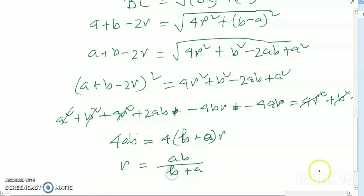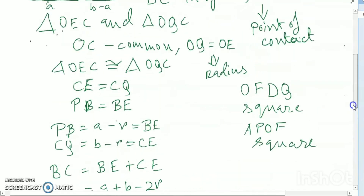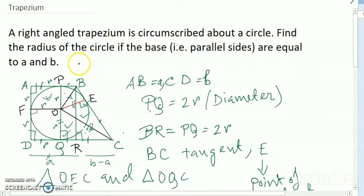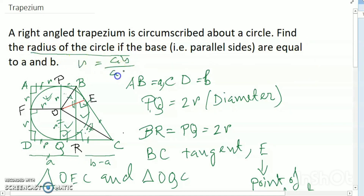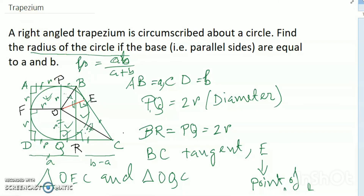So r is equal to 4AB divided by 4 times (A plus B), which simplifies to r equals AB divided by (A plus B). I hope it is clear friends — this is the radius of the circle when the bases are a and b. Thanks for watching.